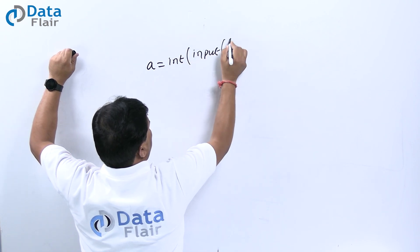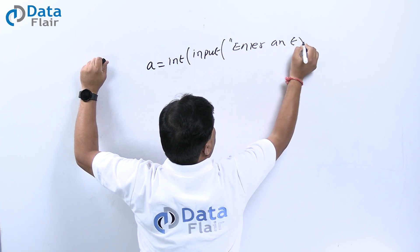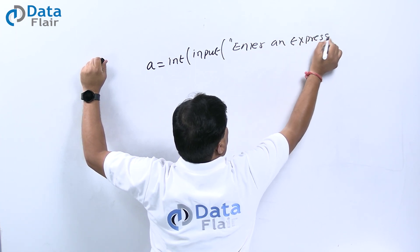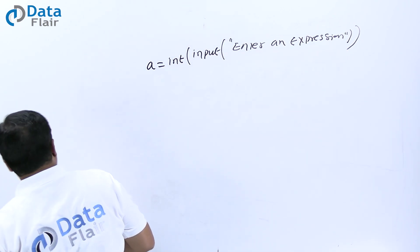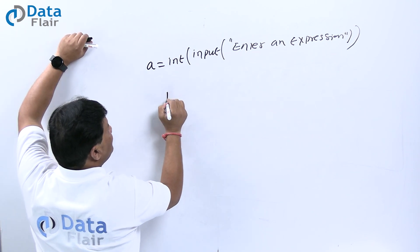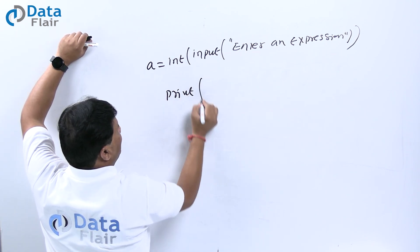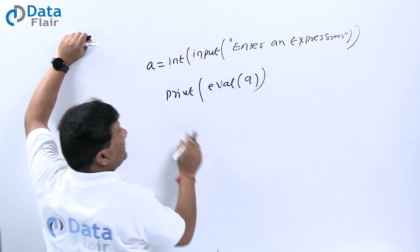Give a message like 'enter an expression'. The user will enter an expression at runtime, and you can calculate that expression and print it. So here we'll go with this eval method.